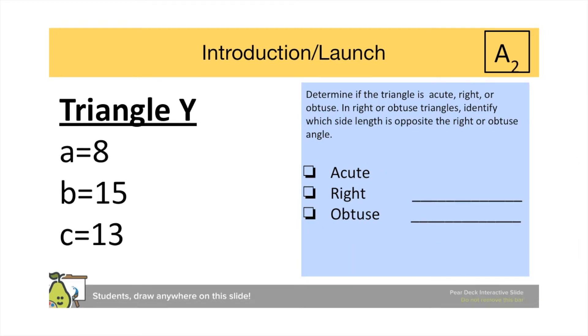For triangle Y, it is an acute triangle, since eight squared plus thirteen squared is greater than fifteen squared.